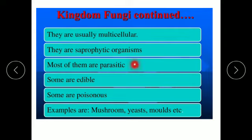Most of them are parasitic. Parasitic nutrition means they derive their nutrition from other living organisms, also called hosts. Some organisms are edible while some are poisonous. Common examples are mushrooms, yeasts, and molds.